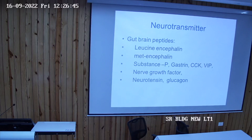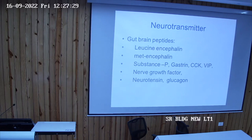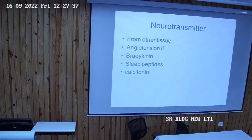A third variety is gut-brain peptides — found in the gastrointestinal tract and also acting as neurotransmitters in the brain. These include leucine-enkephalin, met-enkephalin, substance P, gastrin, CCK, VIP (vasoactive intestinal peptide), nerve growth factor, and glucagon. They are released from the gut and also in the CNS. Other neuropeptides released from other tissues include angiotensin II, bradykinin, and calcitonin.